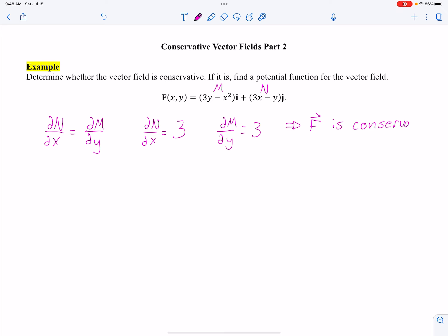Cool, we showed it was conservative. The reason that we do that now is now I know there is a potential function. If it wasn't conservative, there is no potential function, because that's the definition, right? There is a potential function now that I have to find.